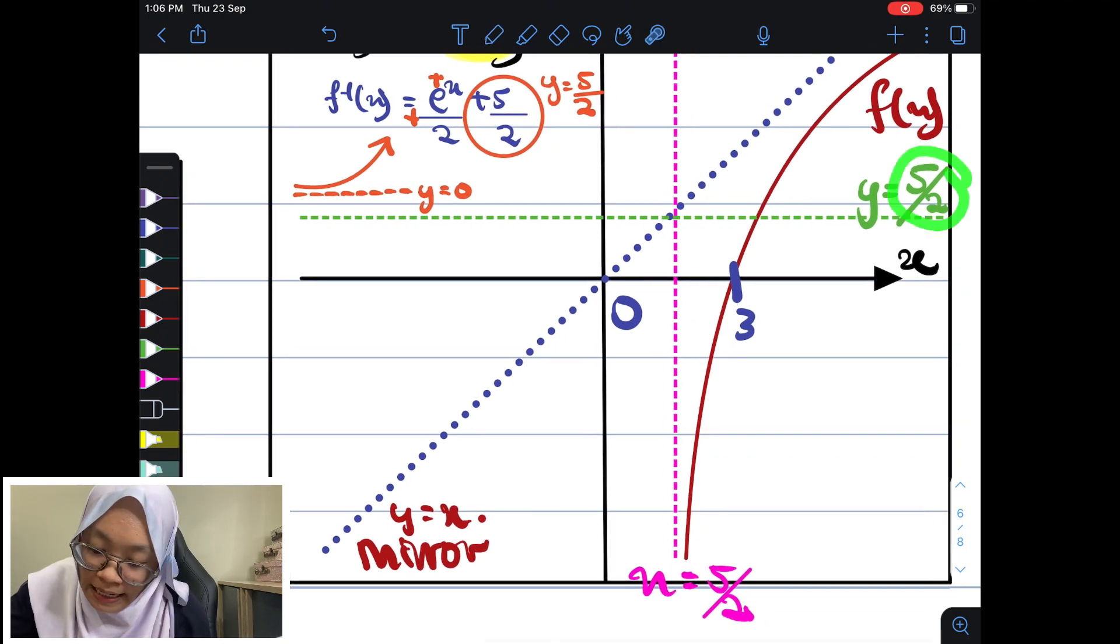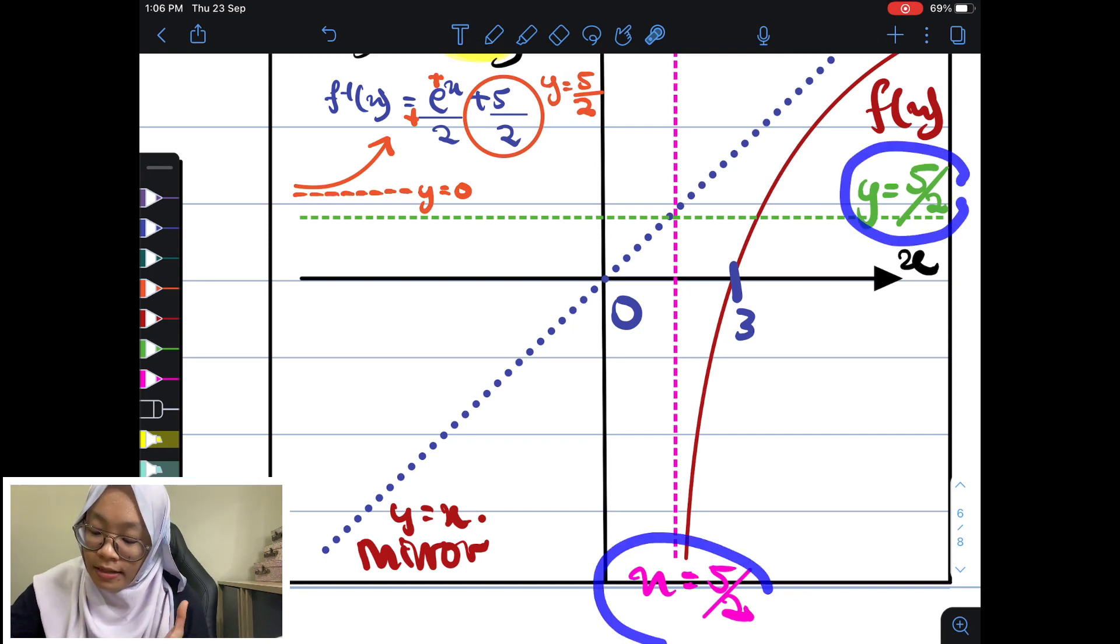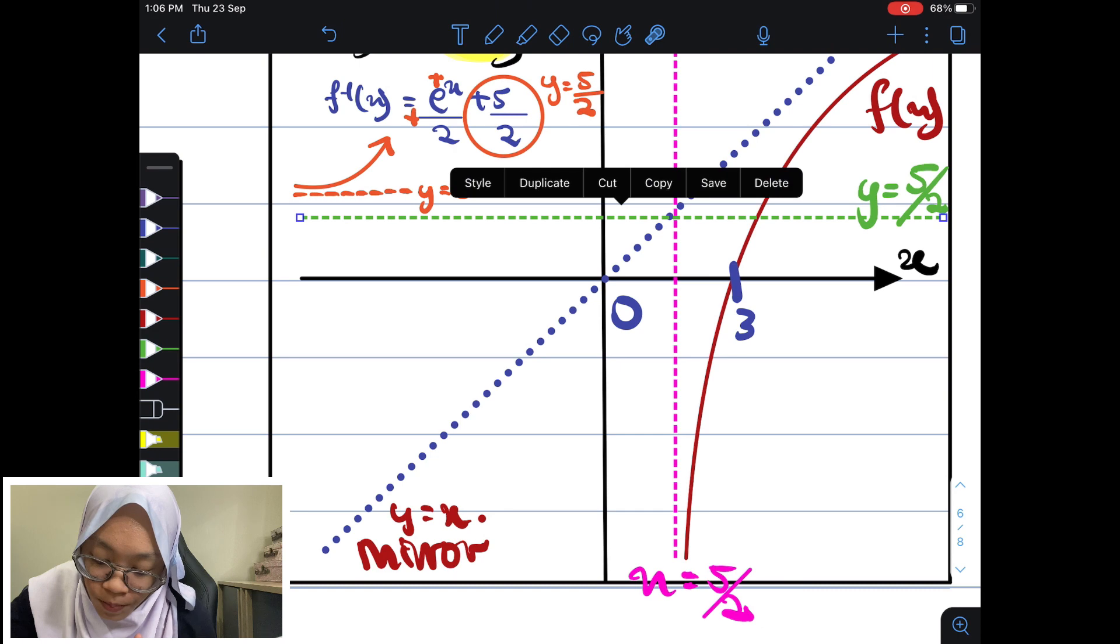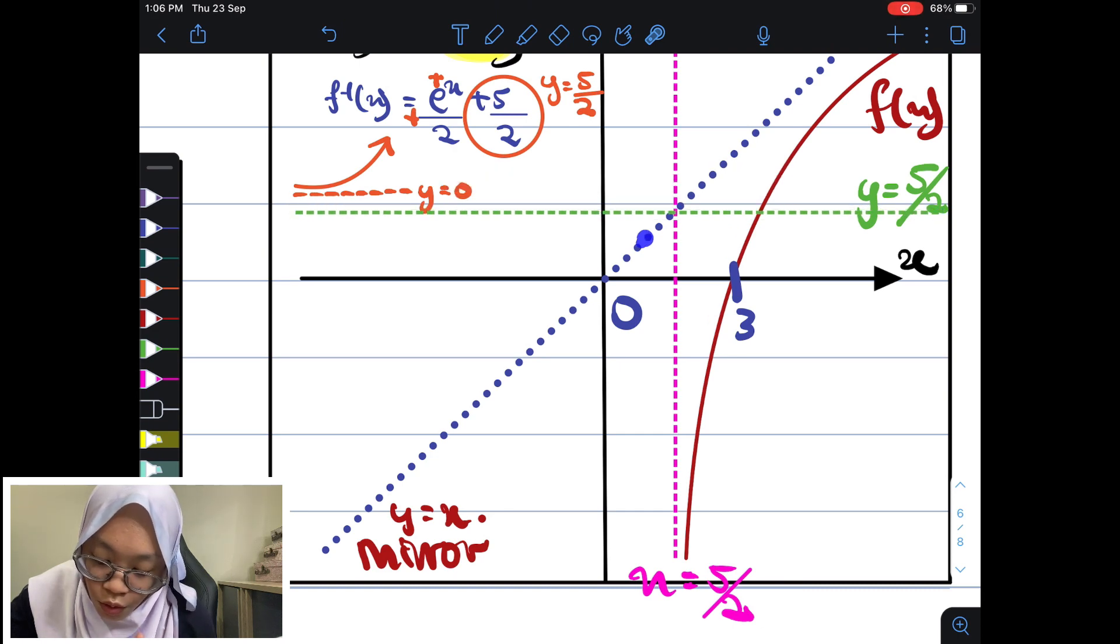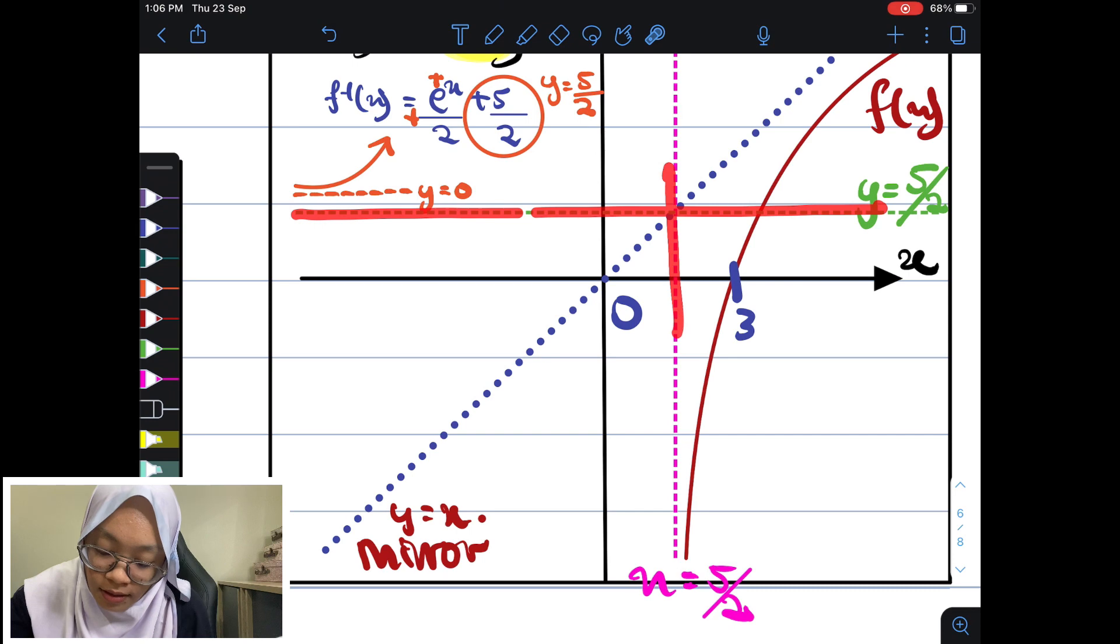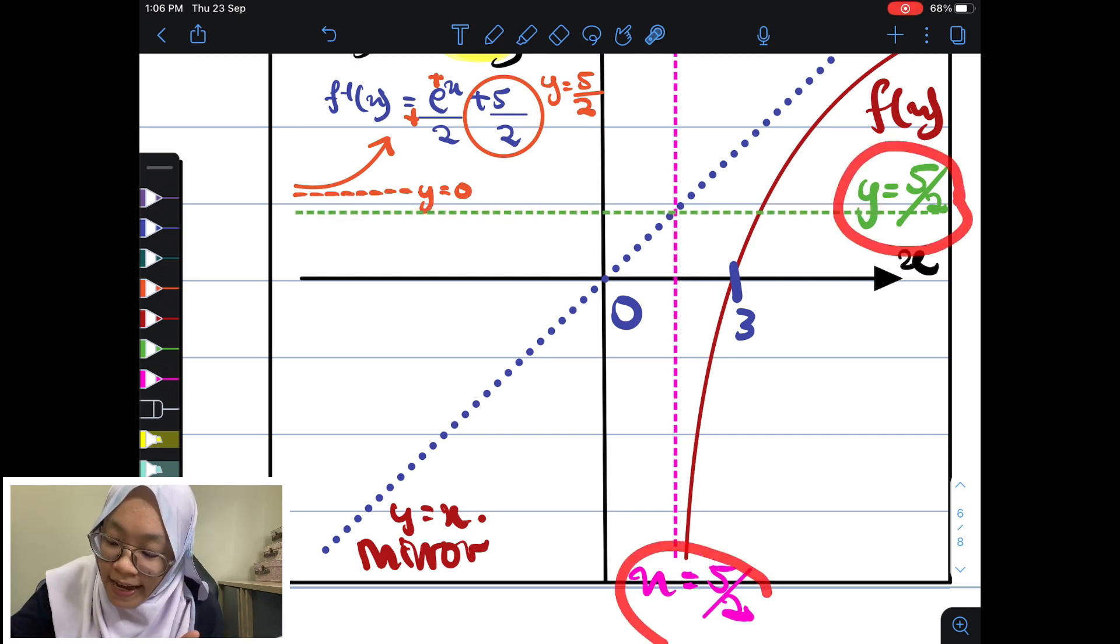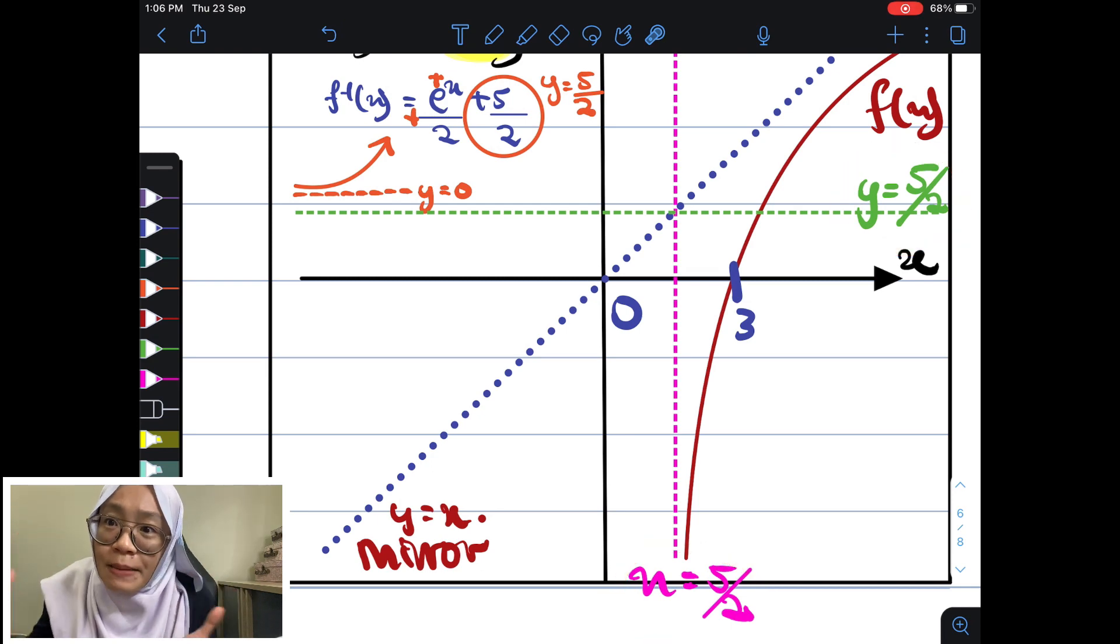See, asymptote pun mesti nilai yang sama. Kalau you sedar sepanjang saya explain graph yang begini, you will see that their asymptote is the same value. And in fact, they will go through the mirror. So, dia akan intersect pada point yang sama. See? Tapi tak perlu pun cari point ini. You don't have to find this point. You just know that they will have the same value. Because they are just reflecting. When they reflect, of course they have the same asymptote.